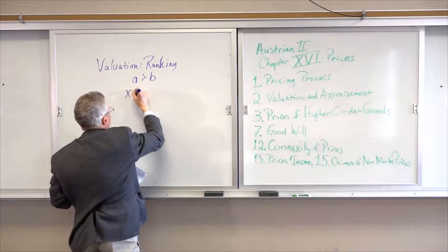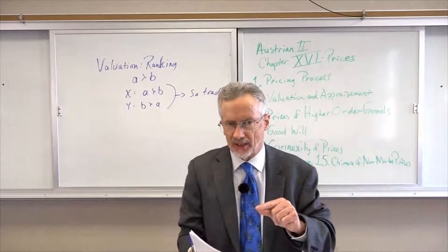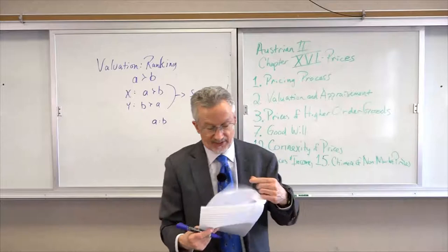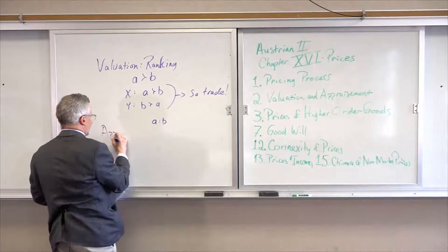How do we get trade? Person X has the ranking: A is preferred to B. Person Y has the ranking: B is preferred to A. And so they trade — they trade an A for a B. There's no equality here. You just say that's the rate at which they traded those things. What's appraisement then? Mises points this out, and this is crucial to his story.